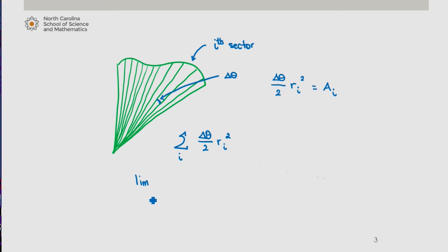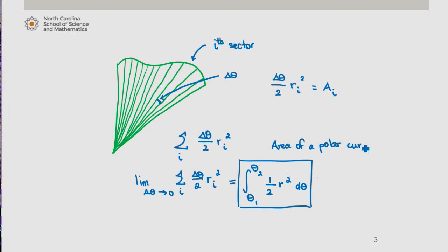So ultimately, I'm interested in letting delta theta approach zero. And I'm adding up the areas of each of these sectors, which we now know as an integral. We're evaluating it from our initial theta to the theta of interest. So theta one, we'll call it theta two, one half, r squared, d theta. So this is the area of a polar curve, r of theta, between theta one and theta two.